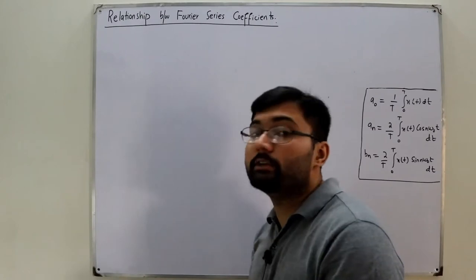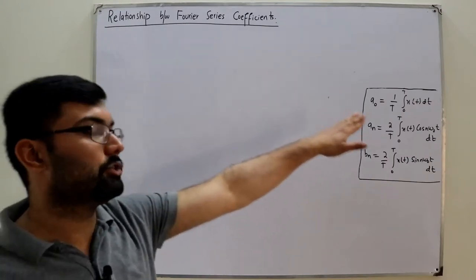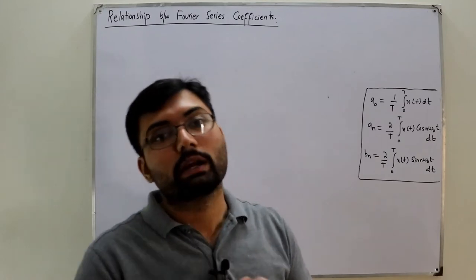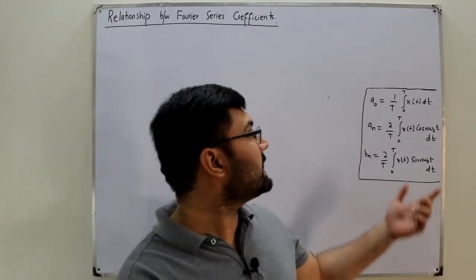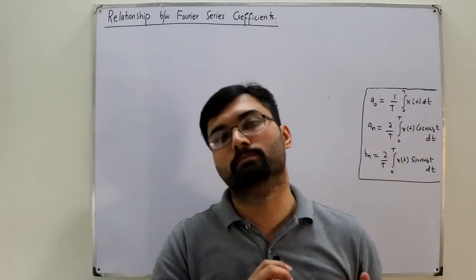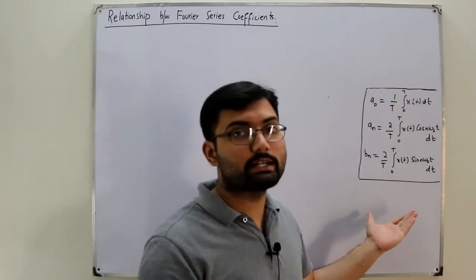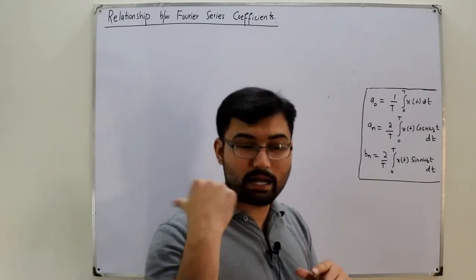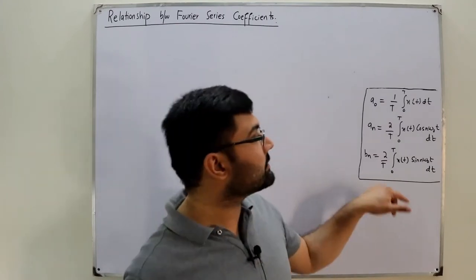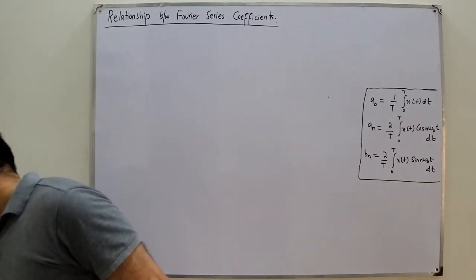Let me explain the meaning of this topic. We have two types of Fourier series that we studied: the complex exponential Fourier series and the trigonometric Fourier series, with complex exponential Fourier coefficients and trigonometric Fourier coefficients. What is the relationship between these two? If you are given trigonometric Fourier coefficients and asked for complex exponential Fourier coefficients, what do you do? Similarly, if you have complex exponential coefficients and need to convert them to trigonometric coefficients — that is what we see in this video.